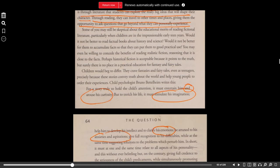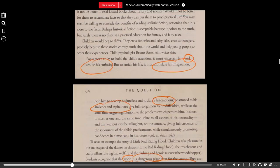Some of you may still be skeptical about the educational merits of reading fictional literature, particularly when children are in the impressionable early teens. Would it not be better to read factual books about history and science? Would it not be better for them to accumulate facts so that they can put them to good practical use? You may even be willing to concede the benefits of reading realistic fiction, reasoning that it is close to the facts. Perhaps historical fiction is acceptable because it points to the truth. But surely, there is no place in a practical education for fantasy and fairy tale?